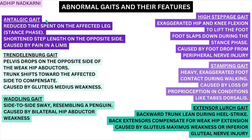To summarize: antalgic gait is simply painful gait where you avoid putting weight on that leg. Trendelenburg and waddling gait are very similar — both involve hip abductor weakness; Trendelenburg is unilateral while waddling is bilateral. High steppage gait uses exaggerated hip and knee flexion to compensate for lack of dorsiflexion. Stamping gait compensates for lack of proprioception. Extensor lurch gait occurs when the glutes are not working, so lumbar extension compensates — pretty much all of them are compensating for something else in the body.